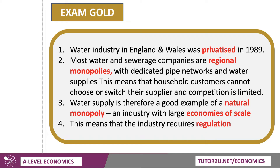Water supply is therefore a good example of what economists call a natural monopoly — an industry with very large economies of scale. When you have a monopoly of this type, it means the industry does require regulation.